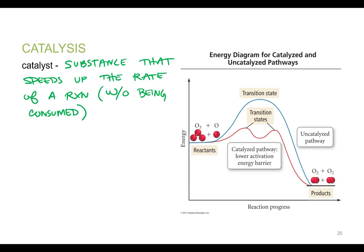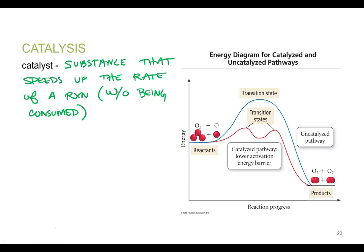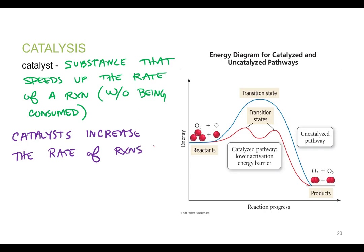How does a catalyst speed up a reaction? How does it increase the rate? Catalysts increase the rate of reactions by lowering the activation energy.